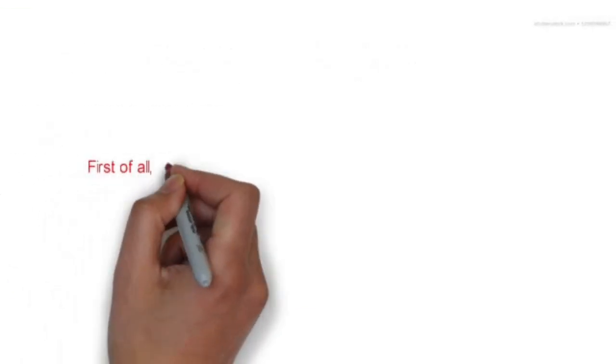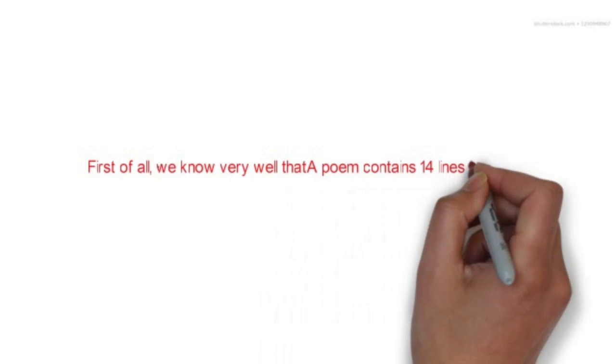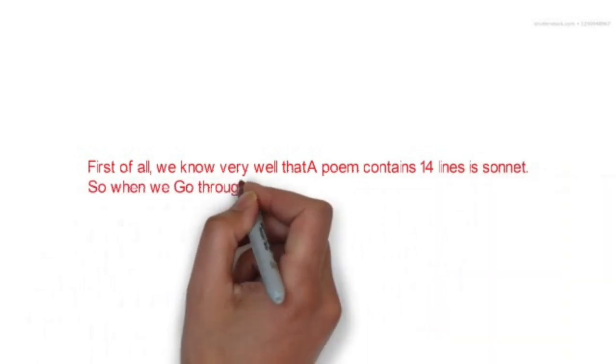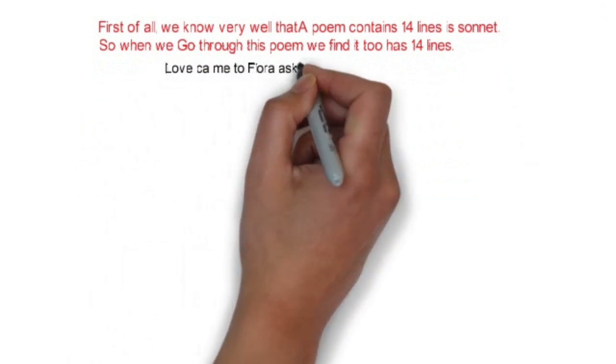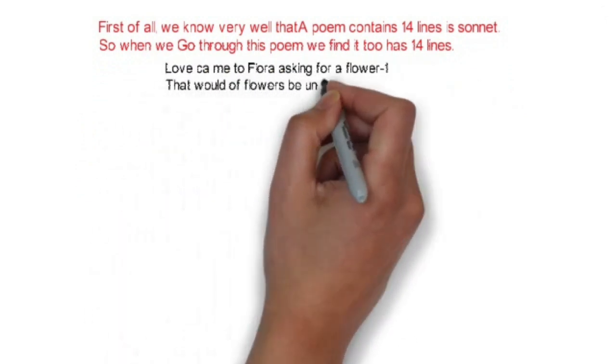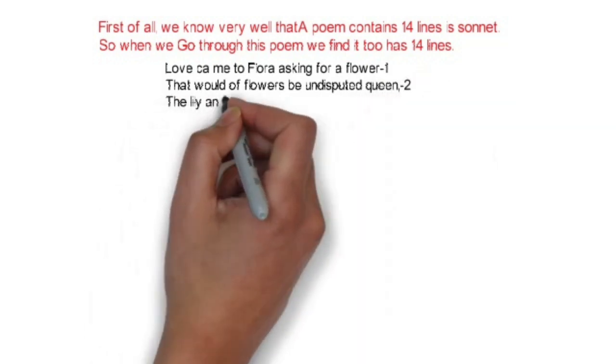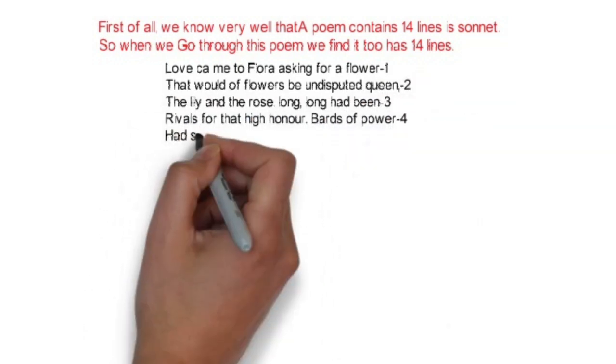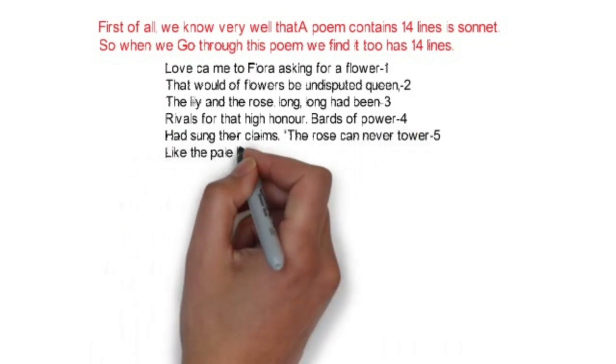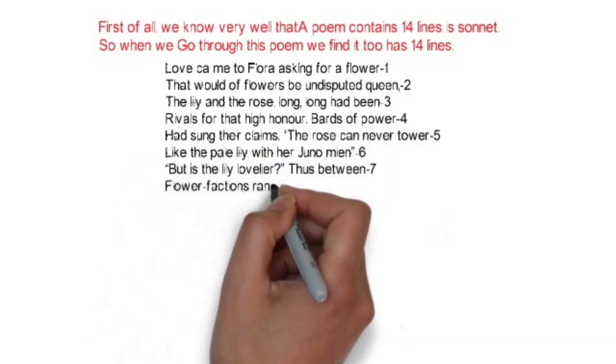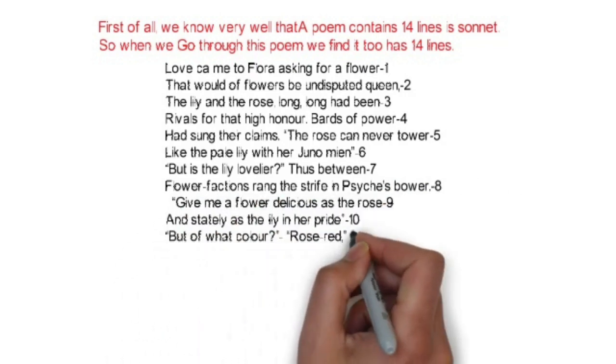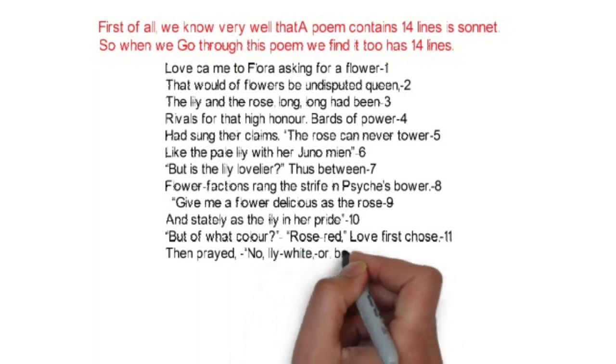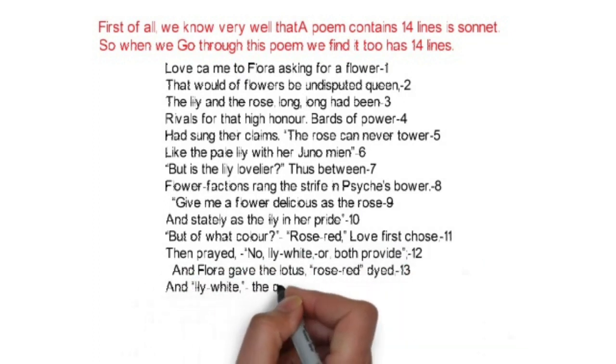So first of all, we all know very well that poems which have 14 lines, that's we call it's a sonnet. So let's we check if this poem really have 14 lines or not. Let's count: 1, 2, 3, 4, 5, 6, 7, 8, 9, 10, 11, 12, 13, and 14.